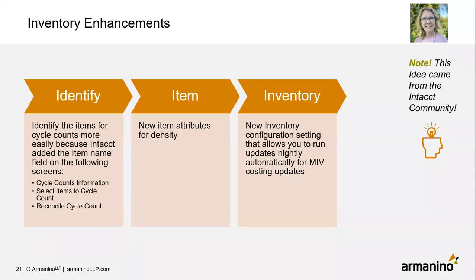Another inventory enhancement: identify items for cycle counts more easily, because Intact has added the item name in cycle counts, select items to cycle count, and reconcile cycle count — so all three apps now have the item name in the reports. There are new item attributes for density, and a new inventory configuration setting that allows you to run nightly updates for any MIV costing updates.